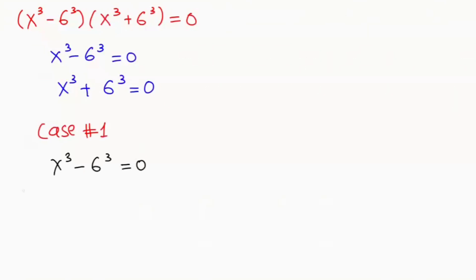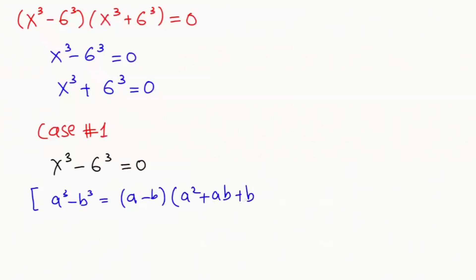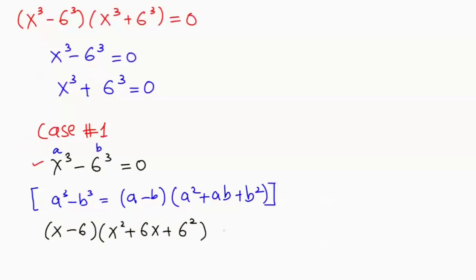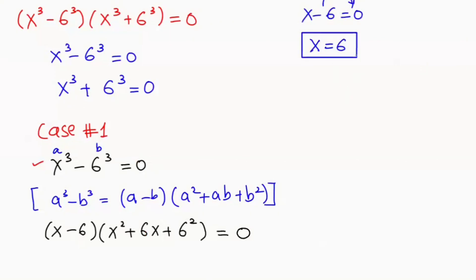For Case 1, x³ minus 6³ equals 0. I will apply the algebraic identity a³ minus b³ equals (a minus b)(a² + ab + b²). So this is our a and b value, giving us (x minus 6)(x² + 6x + 6²) equals 0. From the first factor, x minus 6 equals 0, so x equals 6. That is our first x value.